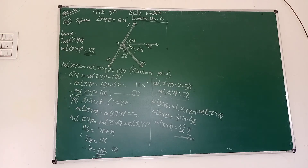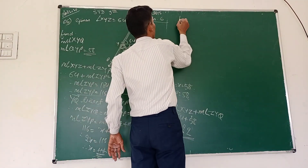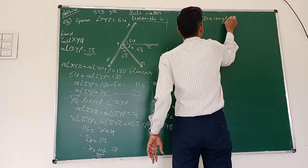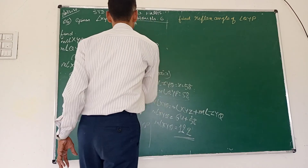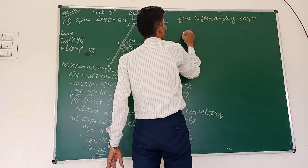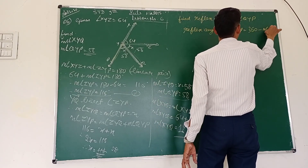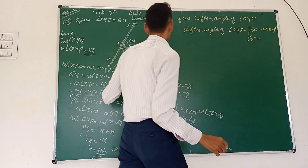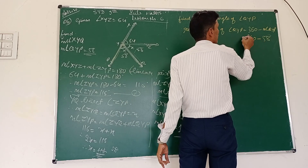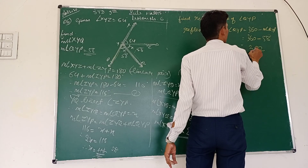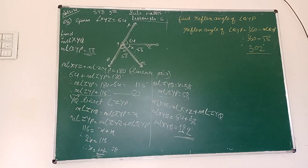Now to find XYQ: angle XYQ equals angle XYZ plus angle ZYQ equals 64 plus 58 equals 122 degrees. This is the answer. There is also one more sub-question: find the reflex angle of QYP. Reflex angle of QYP equals 360 minus angle QYP equals 360 minus 58 equals 302 degrees.